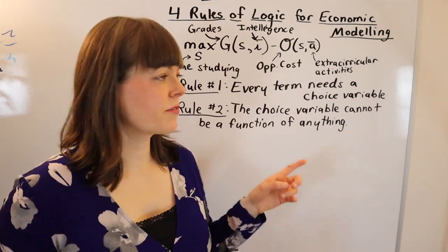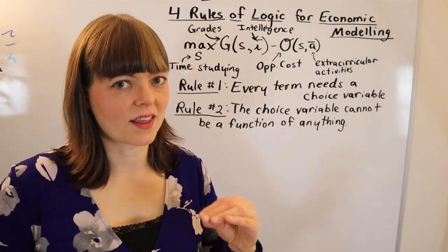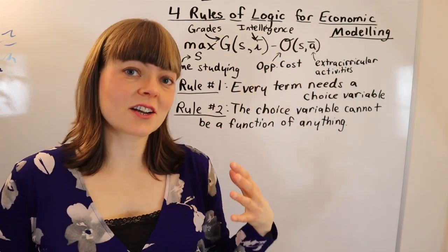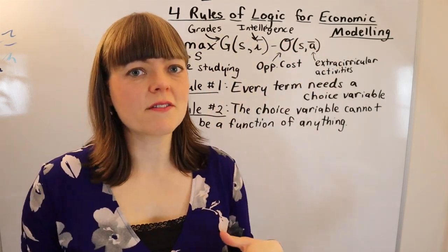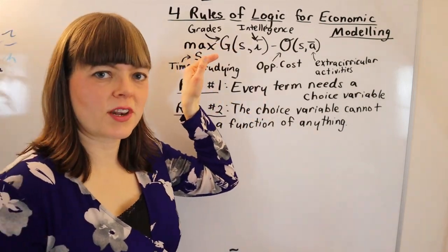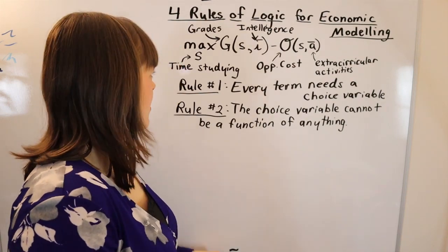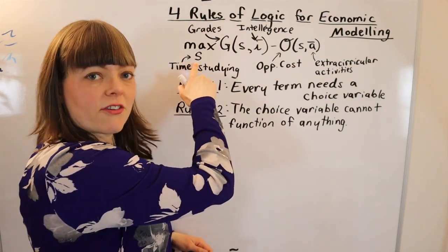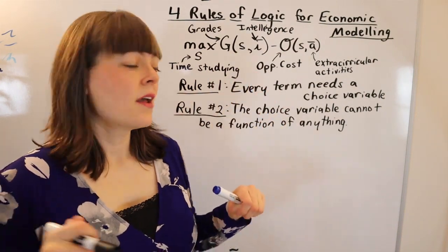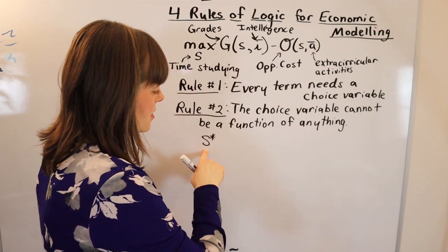The second rule of modeling is that the choice variable cannot be a function of anything in your model. This one is actually pretty counterintuitive, but the reason is because there's a difference between your model and the solution to the model. Specifically, there's a difference between your choice variable in the model, which can take on any value, and the choice variable that is the solved solution to the model.